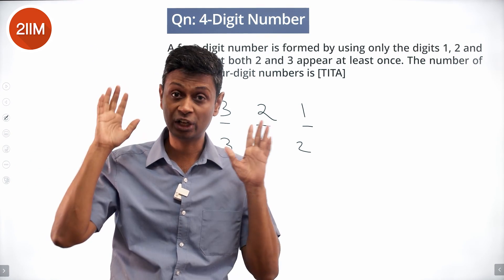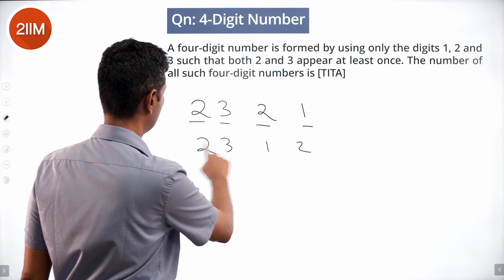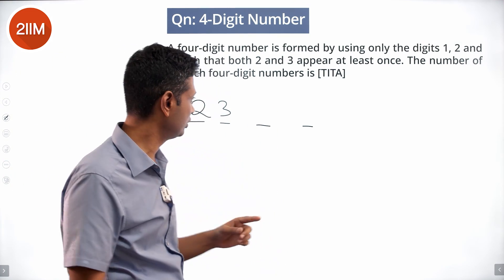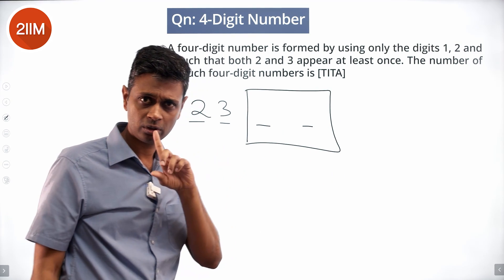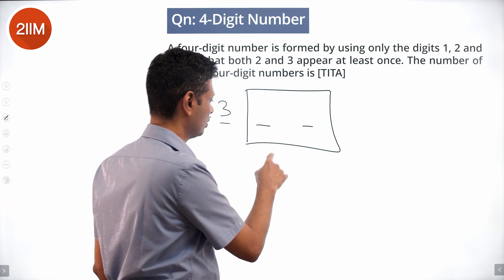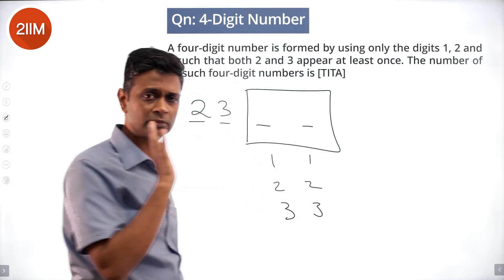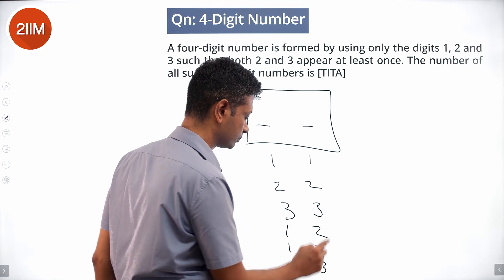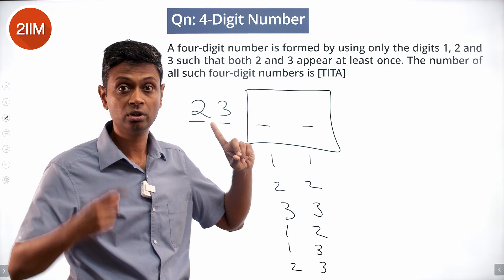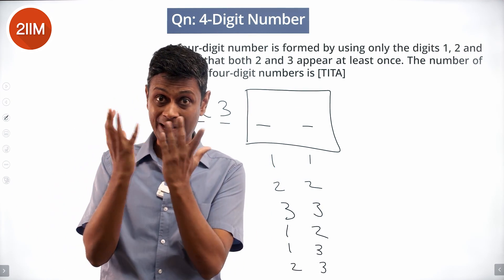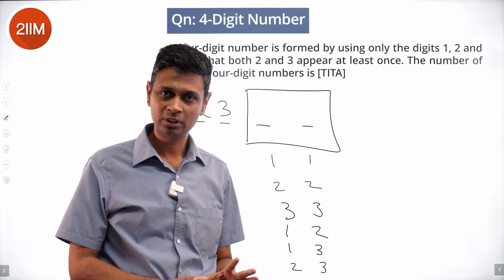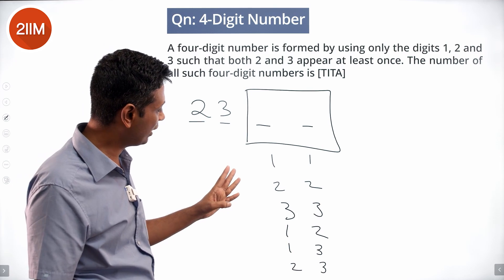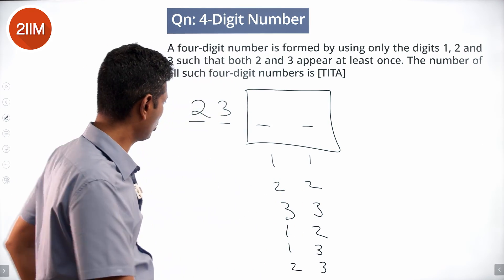The remaining two digits could be the same: (1,1), (2,2), (3,3) — or different: (1,2), (1,3), (2,3). I'm selecting combinations for the last two positions, treating order-independent selections. I don't want to double-count (1,2) and (2,1) as different.